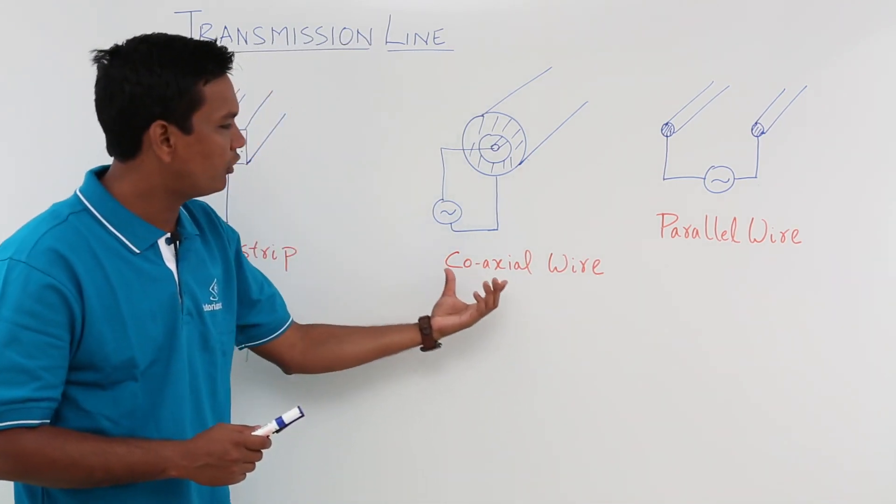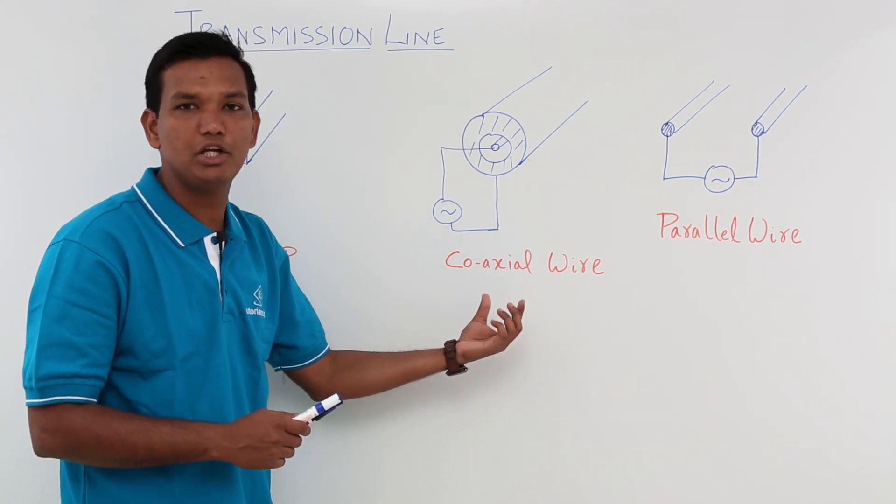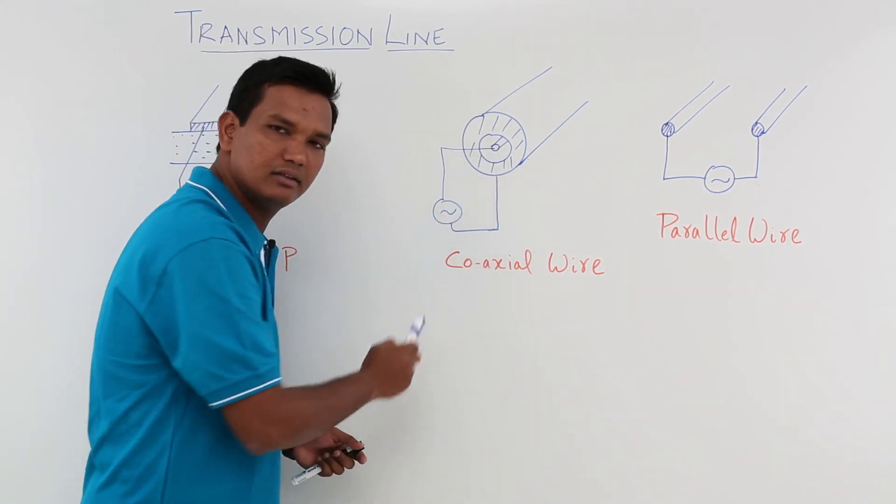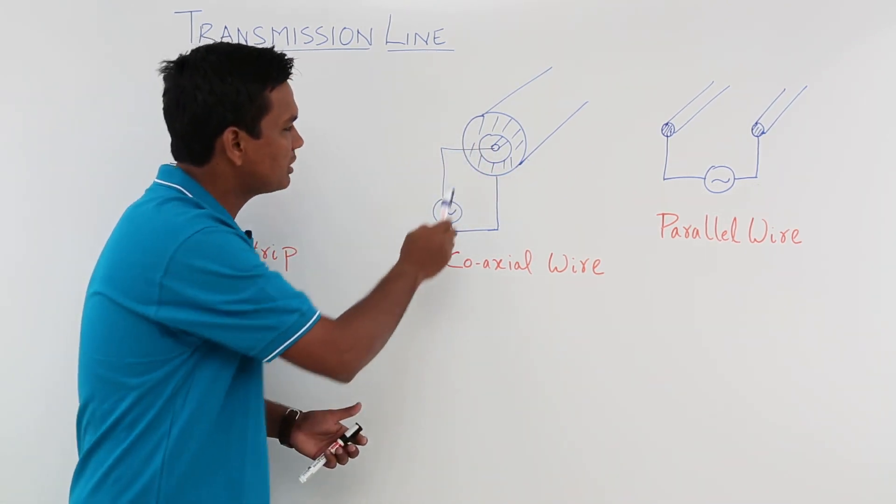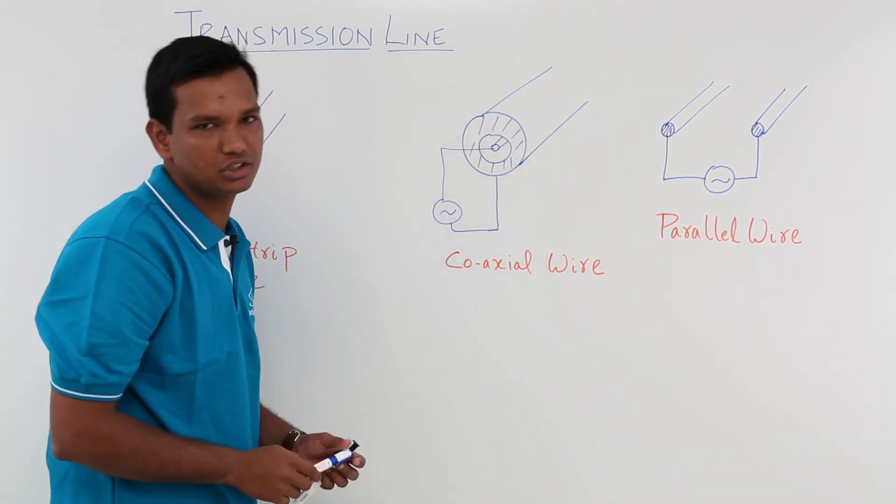In the same way, we have coaxial cables. We have seen these in TV cables, which are nothing but coaxial wires. There will be an inner wire and an outer wire. The power will be flowing in between them. When you supply some voltage between the inner and the outer, the power will be flowing through this wire.